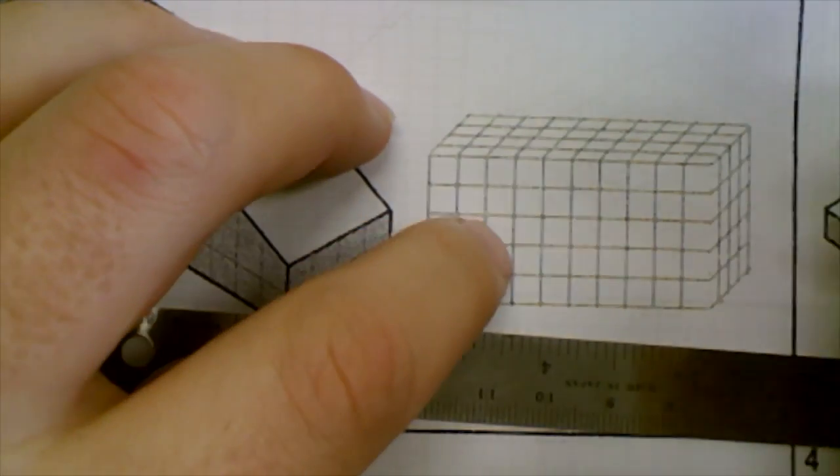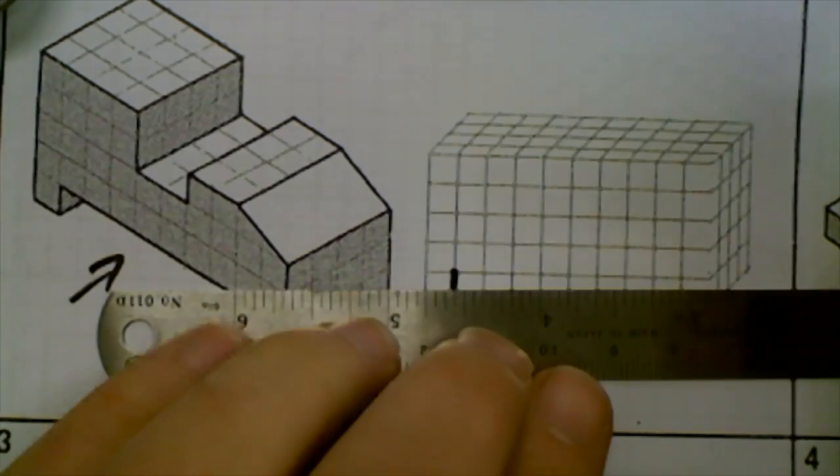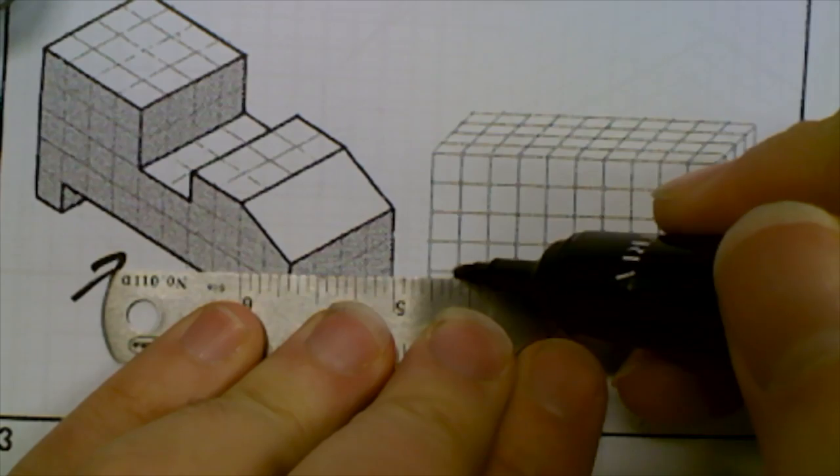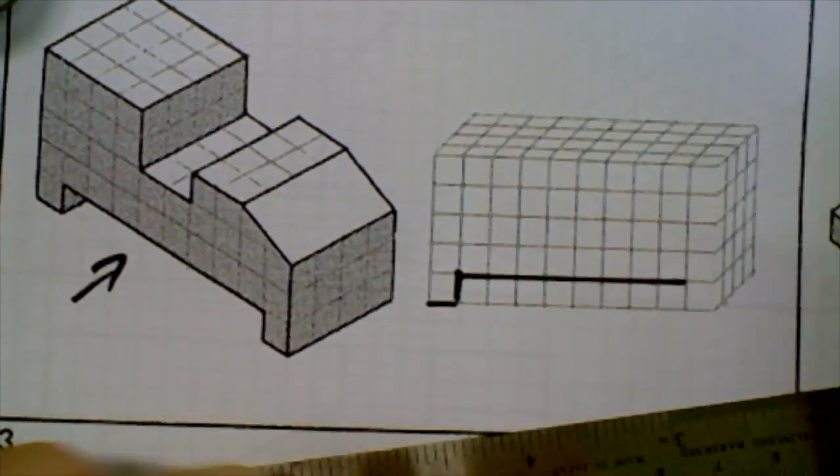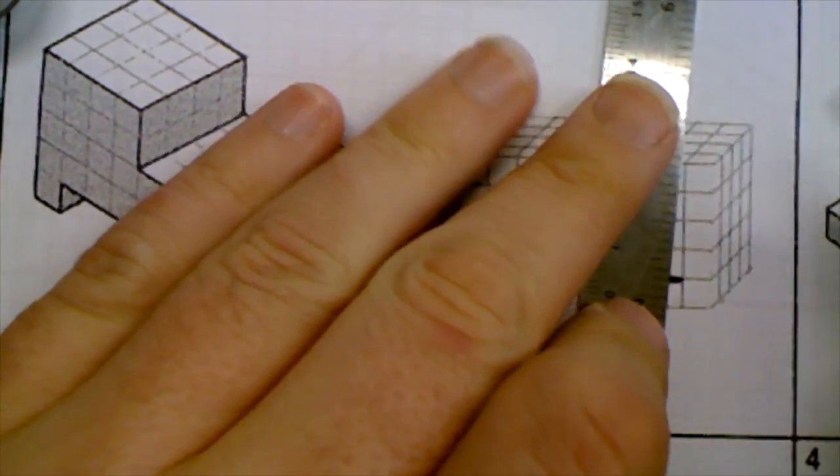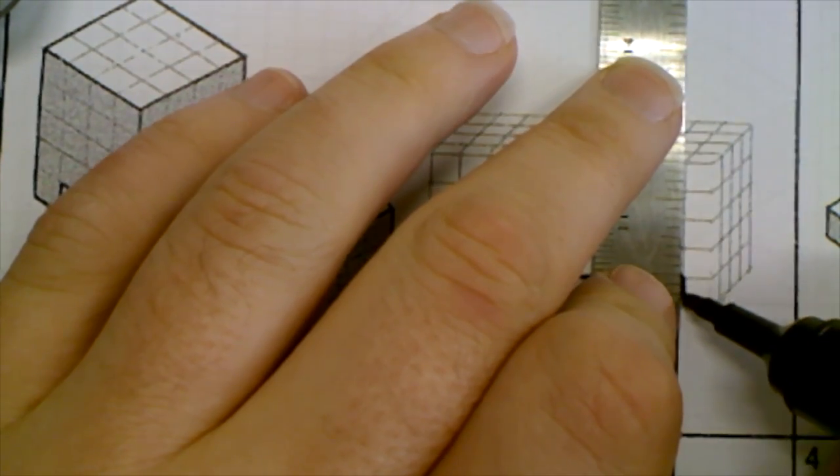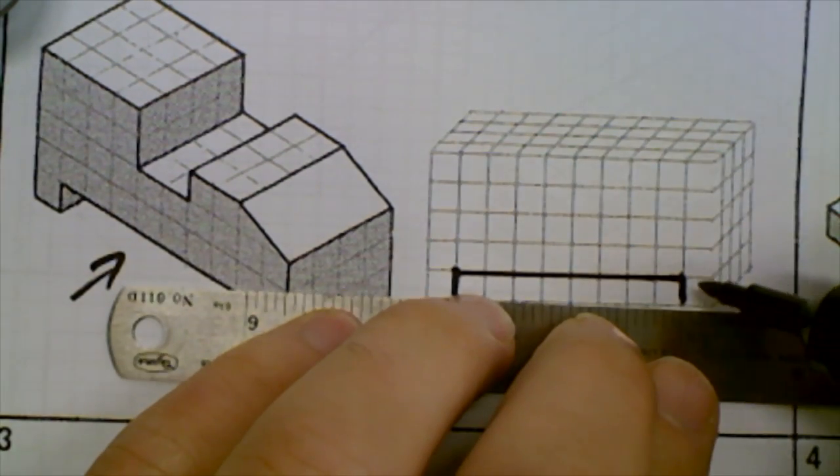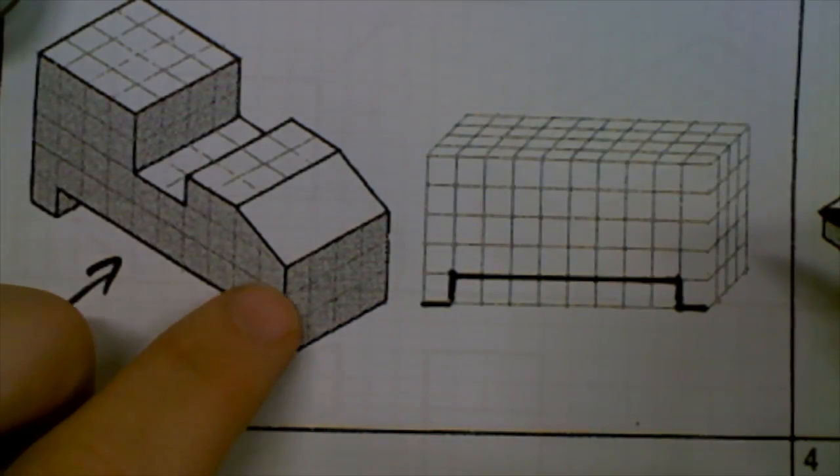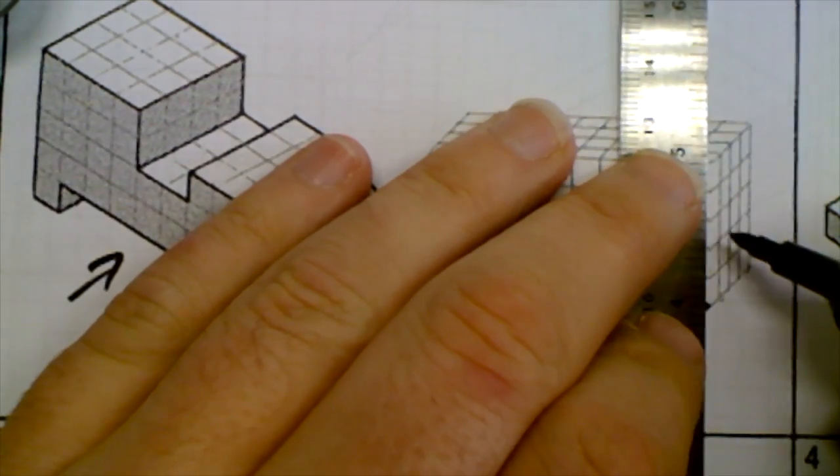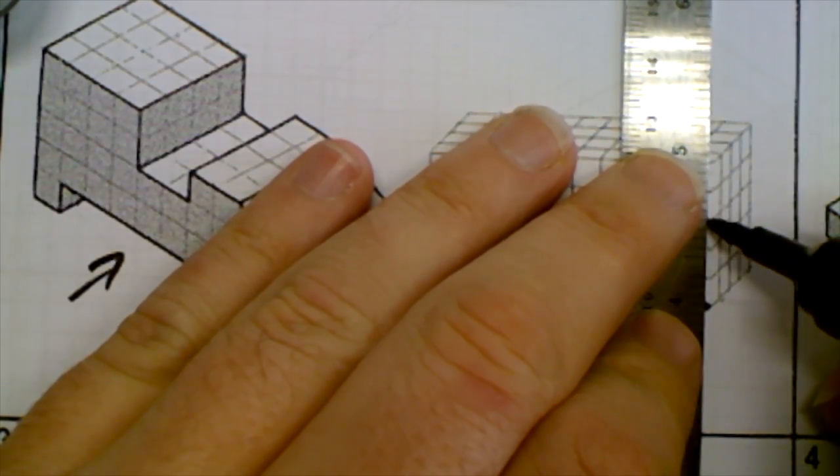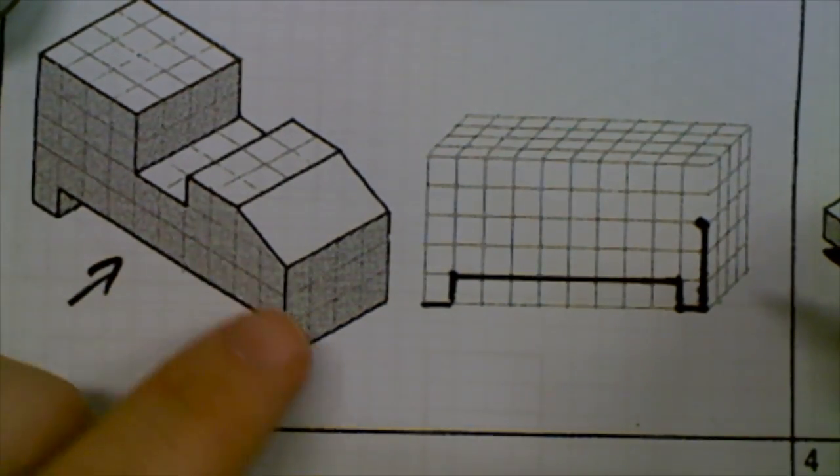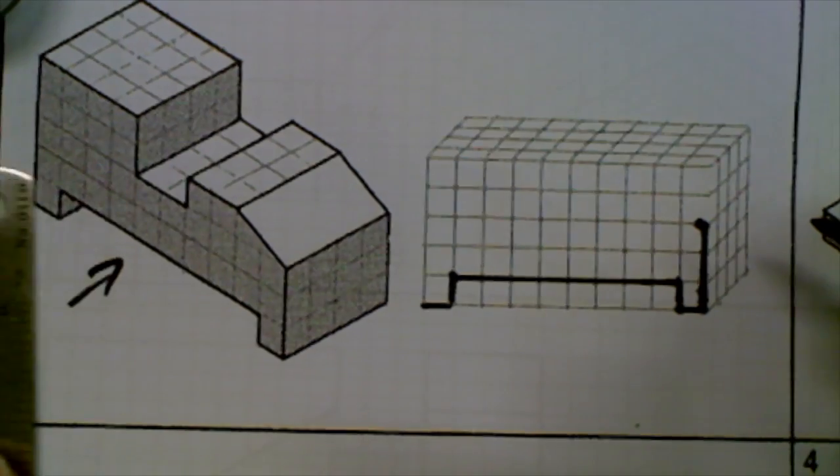And then we've got one block down, one block across. We go one, two, three blocks high. Now we've got an angle. I don't know exactly what the angle is, so I'll leave that for now and come back and go the other way.